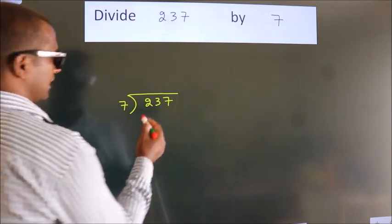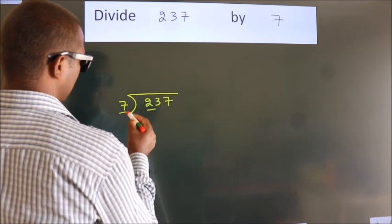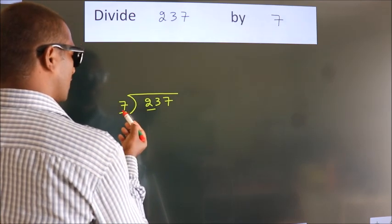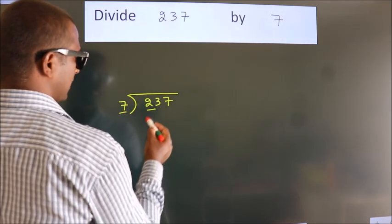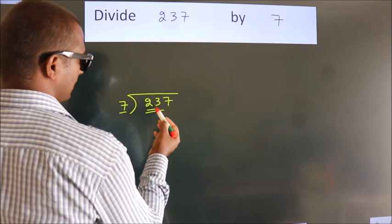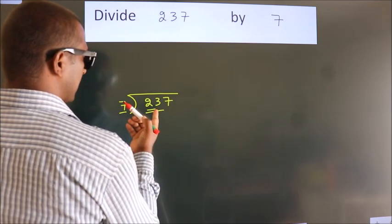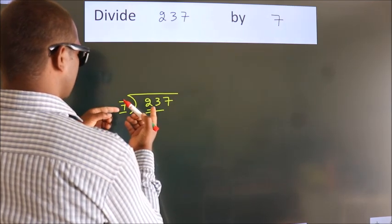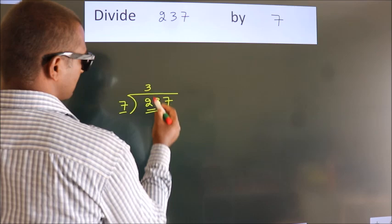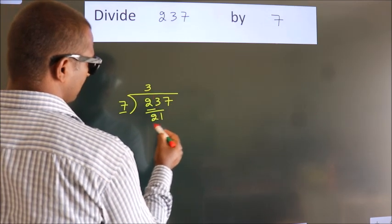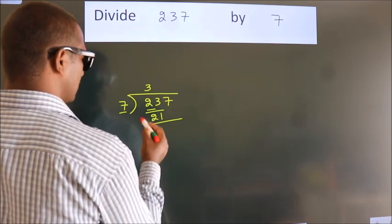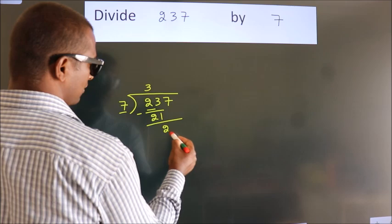Next, here we have 2. Here 7. 2 smaller than 7, so we should take 2 numbers. 23. A number close to 23 in the 7 table is 7 threes, 21. Now we should subtract. We get 2.